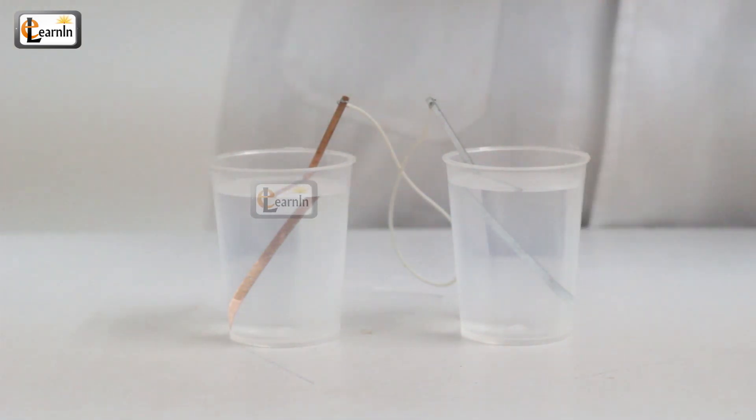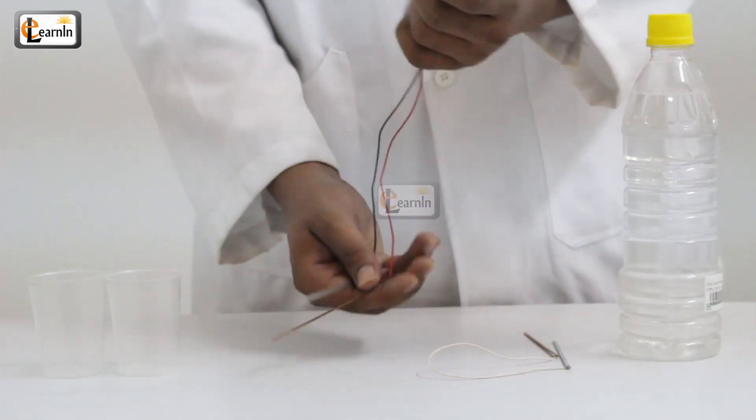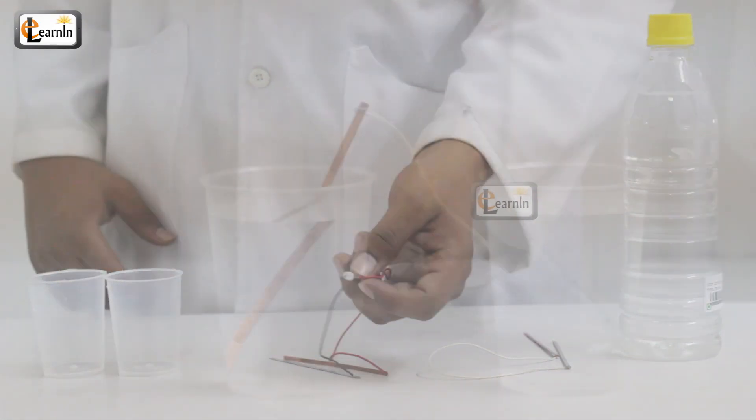And the copper strip in another glass. Take the remaining two strips, the copper and zinc, and connect them to the LED using the two connecting wires.